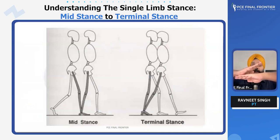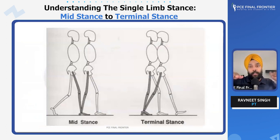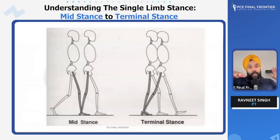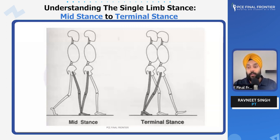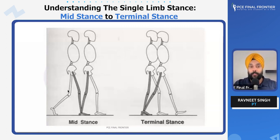This is your initial contact, this is your loading response. Now what you want to do is take the other side leg and take a step. While you're taking the step on the other side, this leg is on one leg — that single limb stance is divided into two phases: one is your mid stance and another one is your terminal stance.